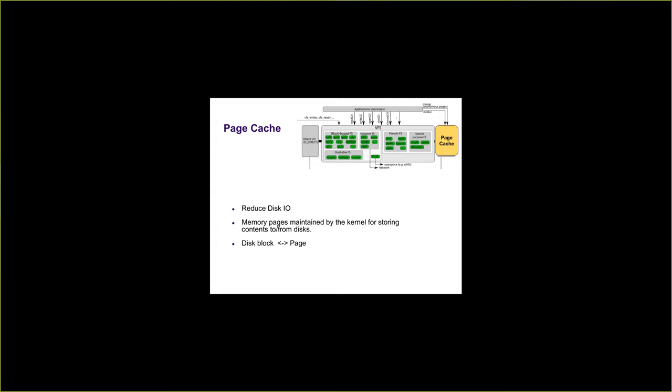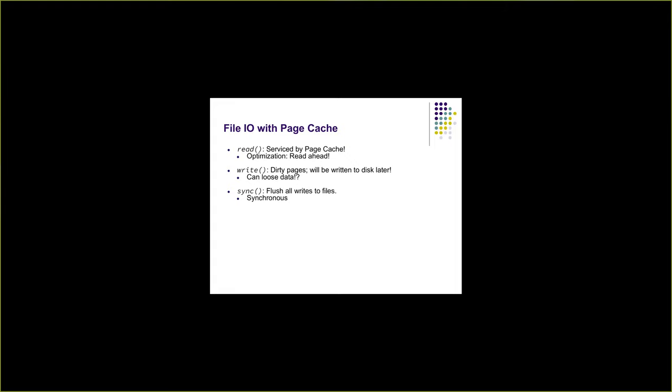That's why, once the file is open and we read it once, consequent reads are almost very fast. You might have noticed this — that is because of page cache. So when we have page cache, reads will all be serviced by the page cache. Whenever a read happens, we look in the page cache, and if the corresponding page for the corresponding block is present, we serve from the page cache.